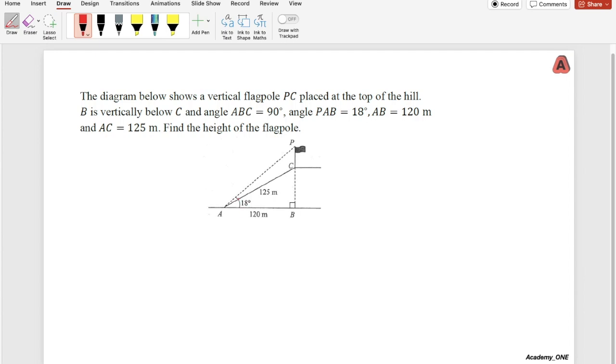...which is this one, is 90 degrees, a right angle. The angle PAB is 18 degrees, and the length of AB is 120m. The length of AC is 125m. So find the length of the pole. The length of the pole can be PC.